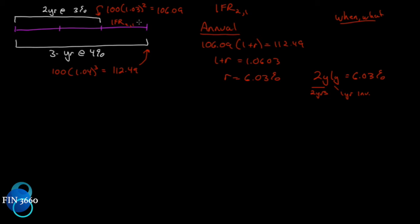We can see that if we invest at the two-year rate of three percent, and then invest at a one-year rate of 6.03 percent after that, it is the same end result as investing for three years at four percent. The two spot rates imply that this one-year rate two years from now should be 6.03%. If it is not, it sets up arbitrage opportunities, and people will come in and arbitrage that opportunity away such that the forward rate will equal that value.